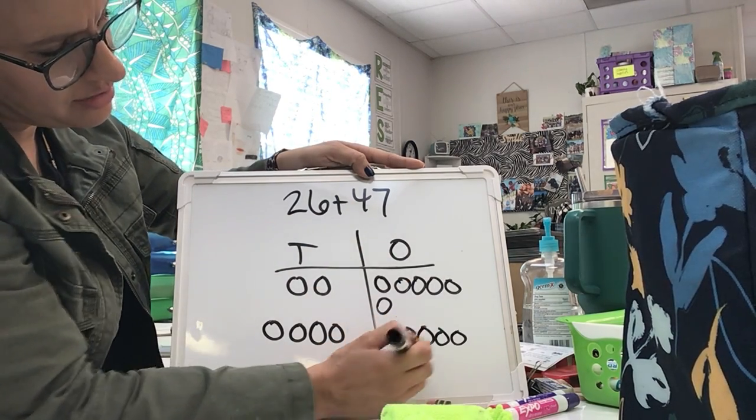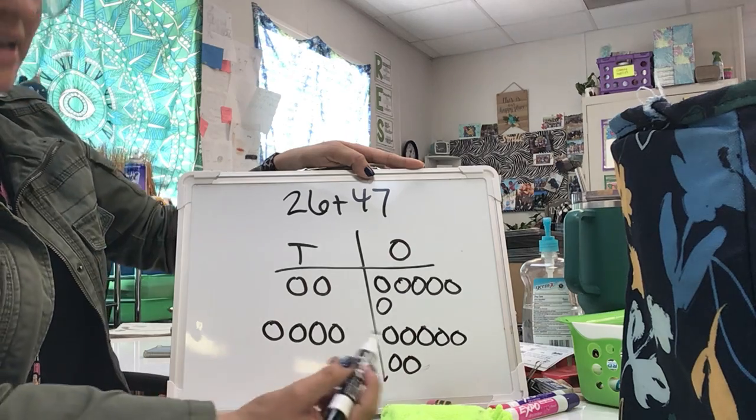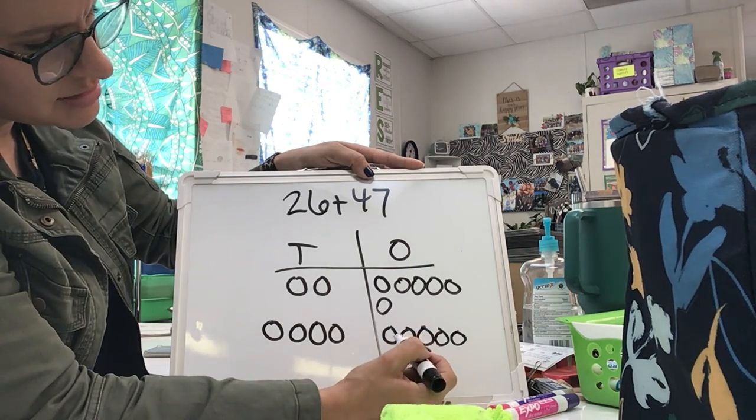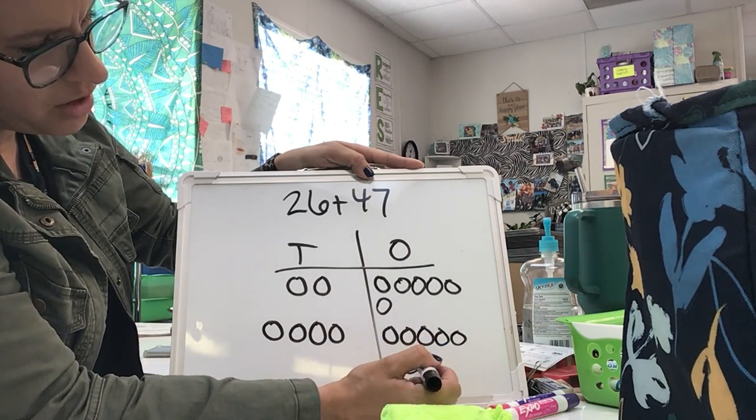I draw 1, 2, 3, 4, 5, 6, and 7 ones. I'm going to count my ones. 5, 6, 7, 8, 9, 10, 11, 12, 13.